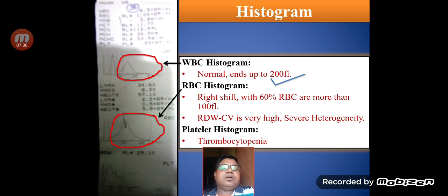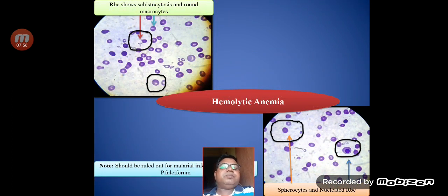The RBC histogram is totally shifted towards the right, most cells are macrocytic, and there is a high degree of variation between these cells, resulting in high RDW-CV. The platelet count is also low. On the peripheral smear of this patient, we can see the presence of schistocytes and round macrocytes, along with nucleated RBCs and spherocytes — findings commonly seen in hemolytic anemia. Even before seeing the smear, we can diagnose this condition by knowing the histogram changes.